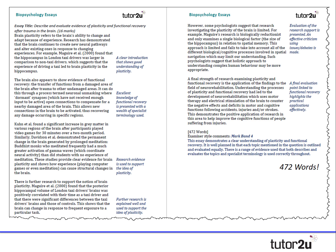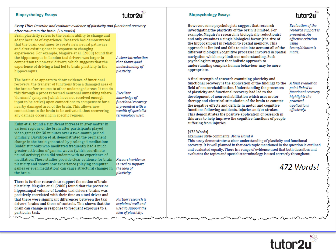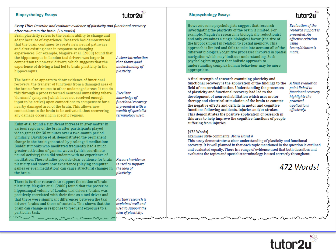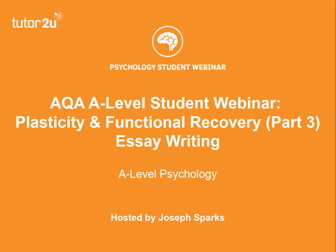So there you have it — an entire essay on plasticity and functional recovery in 472 words, containing a detailed AO1 section and three effective evaluation sections, which incorporate an issue and a debate within the answer. In this video we've looked at how to write an essay on plasticity and functional recovery. I hope you found that useful. Thank you once again for watching.